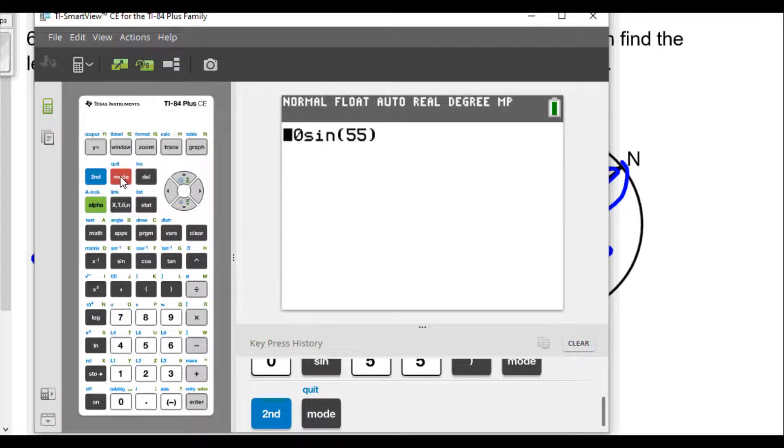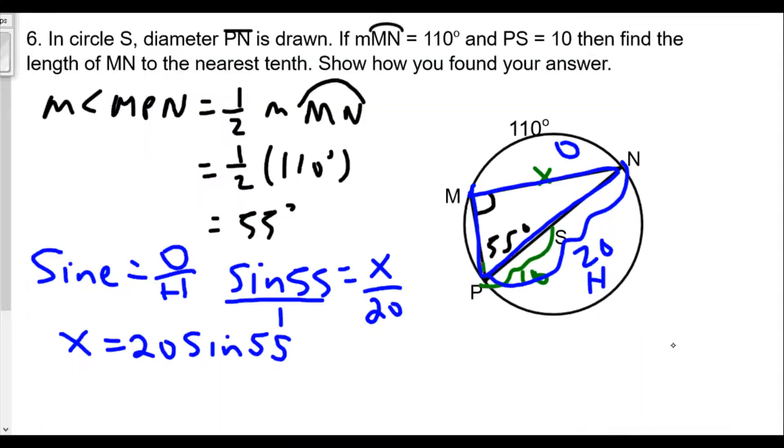Always check because if you're using degrees, you know, then we have to make sure we're in degree mode. So here we go. So hit enter and we find to get 16.38. 16.38. Well, x is approximately 16.38. But to the nearest tenth, we're going to do 16.4.